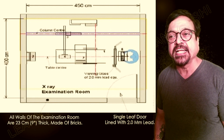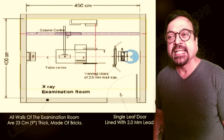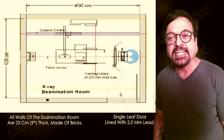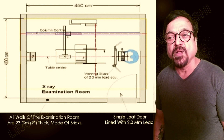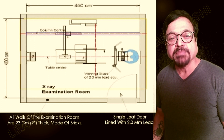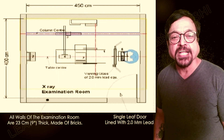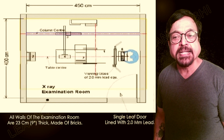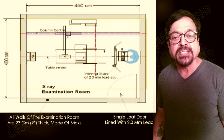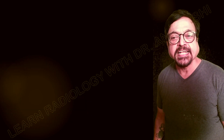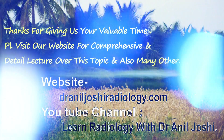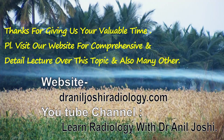Here you can see how an x-ray room is laid out — there is the x-ray unit, the chest stand, and the wall thickness is shown. The entrance is clearly marked, and the primary radiation should never be directed towards any of the doors or windows; that is, the tube should not face these openings.